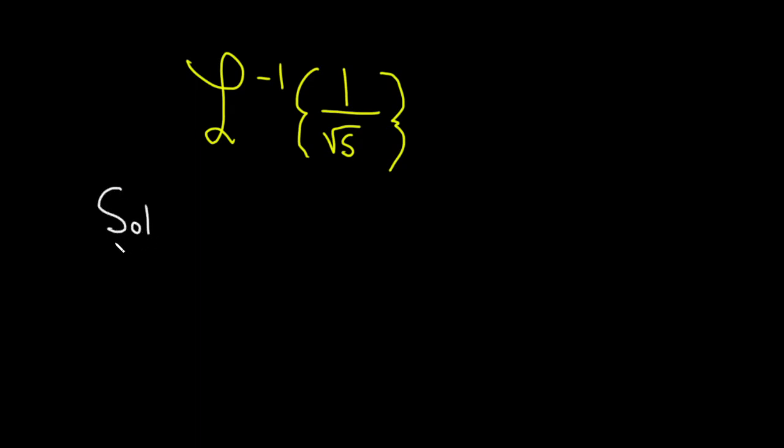So, solution. The formula that we're going to use for this is the following. You have the Laplace transform of t to the negative one-half. This is actually equal to the square root of pi over s. So that's the formula for the Laplace transform of t to the negative one-half.